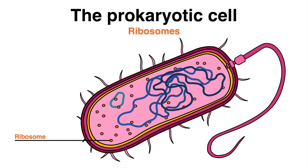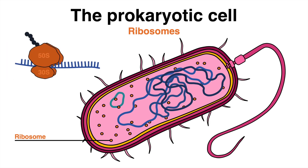One of the most important organelles in the cytoplasm of a prokaryotic cell is the ribosome. Ribosomes are responsible for synthesizing proteins, which are the building blocks of life. Despite their simplicity, prokaryotic cells are capable of carrying out all of the necessary functions of life, from growth and reproduction to responding to environmental stimuli.